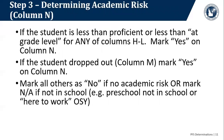Step three: determining the academic risk. Now you're making some decisions. Look at column N — if the student is less than proficient on any grade-level assessment in columns H through L, mark yes in column N. That means the student is not proficient on a state assessment and is considered to be at risk of failing. Also look to see if the student dropped out — if that is marked yes, also mark academic risk in column N. Mark all others as no if there is no academic risk, or N-A if the student is not in school — for preschoolers or out-of-school youth who are not dropouts.